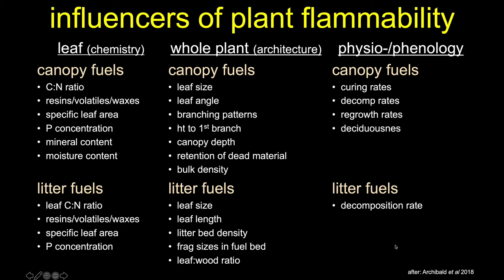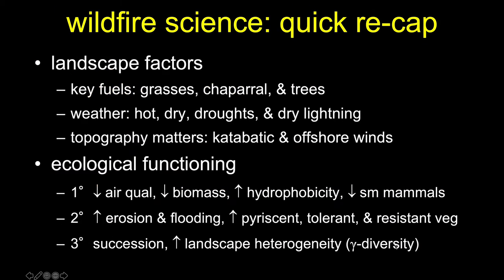We can talk about the individual leaf scale, the whole plant architecture, and the physiology and timing — the blooming, etc. — of plants and plant tissues. All the cast-off or fallen-off materials become litter on the ground. Various landscape factors contribute to wildfires. The key fuels in California are grasses, chaparral and coastal sage scrub communities, and robust woody tree communities.